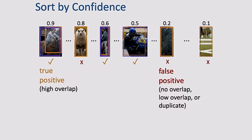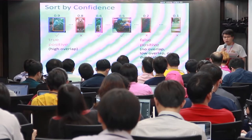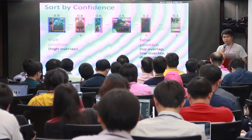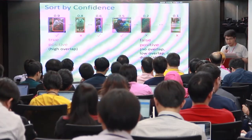For each detection, we call it a true positive if it overlaps significantly with one of the ground truth bounding boxes — it's a true detection. A detection that doesn't overlap with any ground truth bounding box, or has very low overlap, is called a false positive — it should not have been detected. Bounding boxes that do not correspond to any ground truth are equal to false positives.